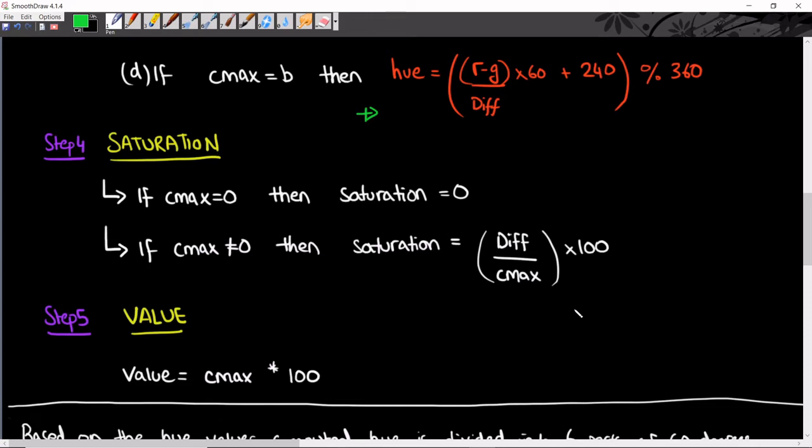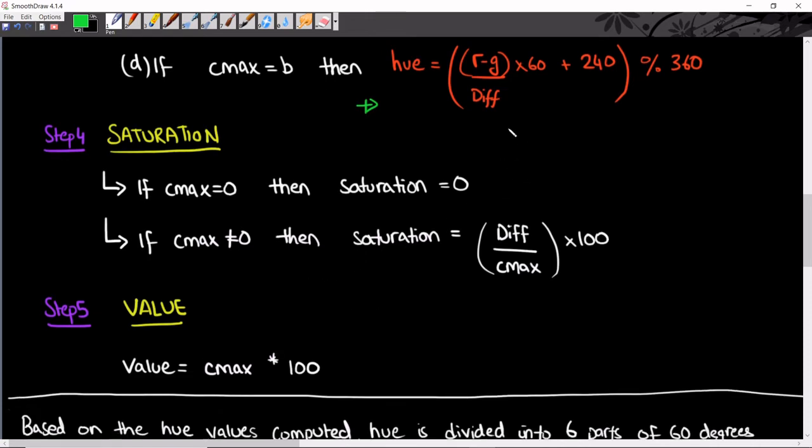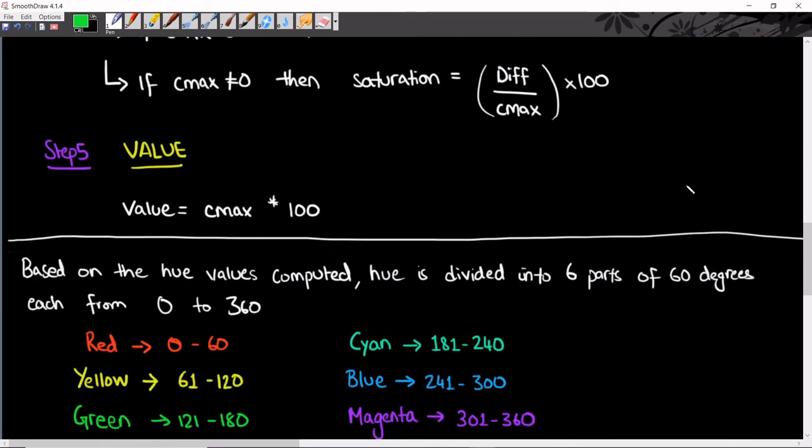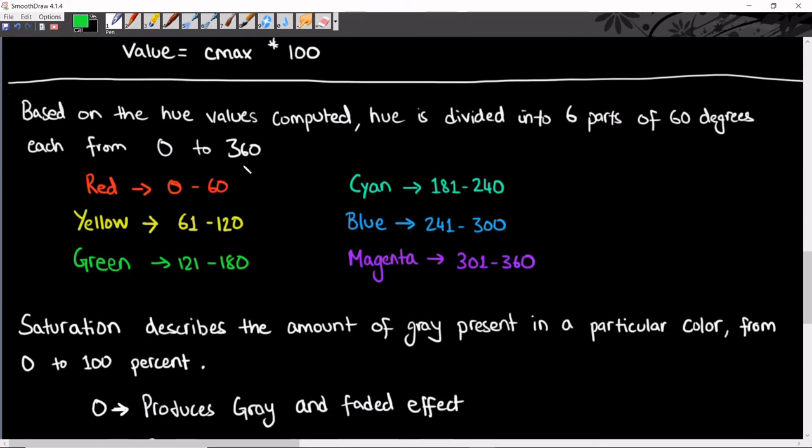Your value is simply defined as C max multiplied by 100. As we just found hue, recall from linear algebra that if you divide any number by 360, it has a set of possible remainders from 0, 1, 2 up to 359. These are 360 values in total since we're indexing from 0.